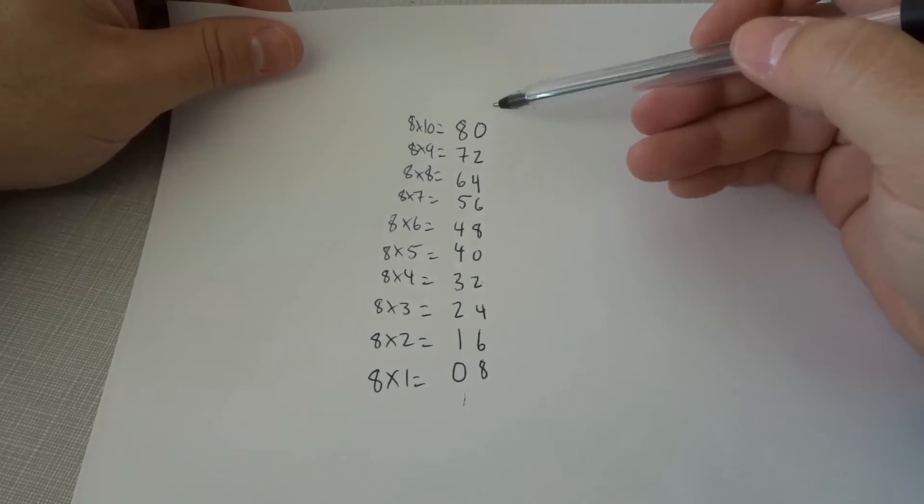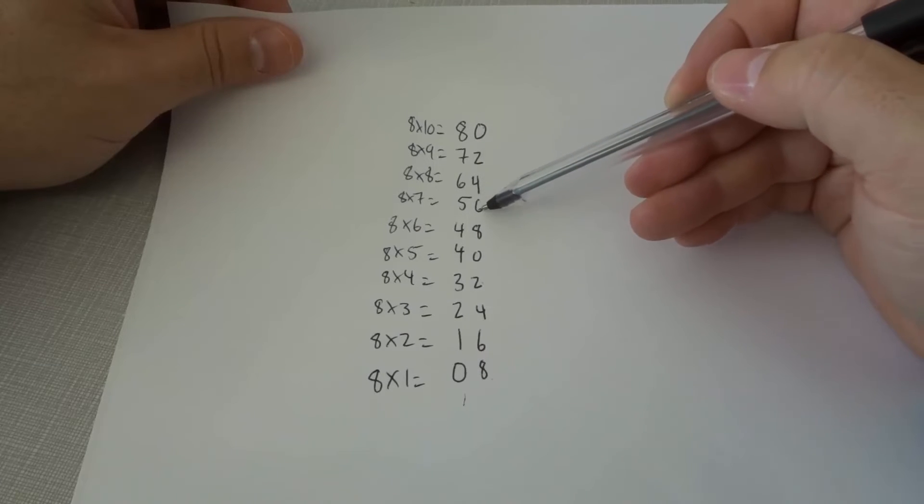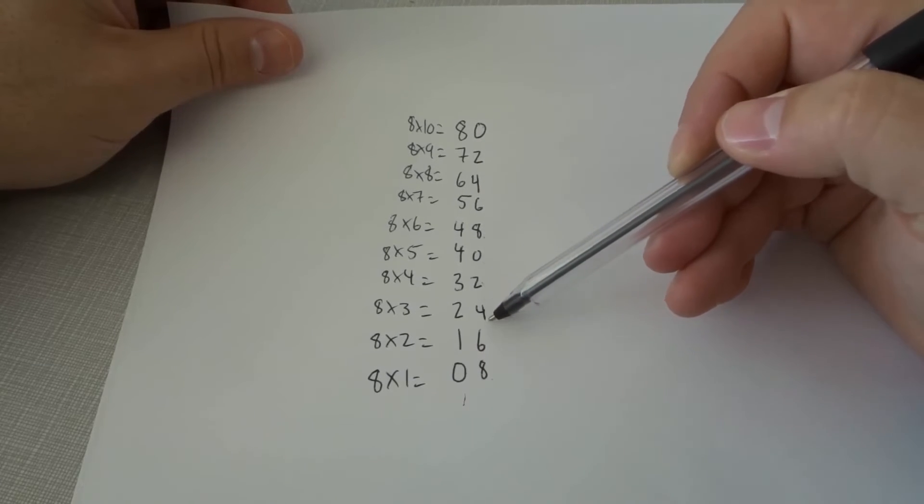Then beside those numbers, we counted up by 2's from 0 to 8: 0, 2, 4, 6, 8, then 0, 2, 4, 6, 8.